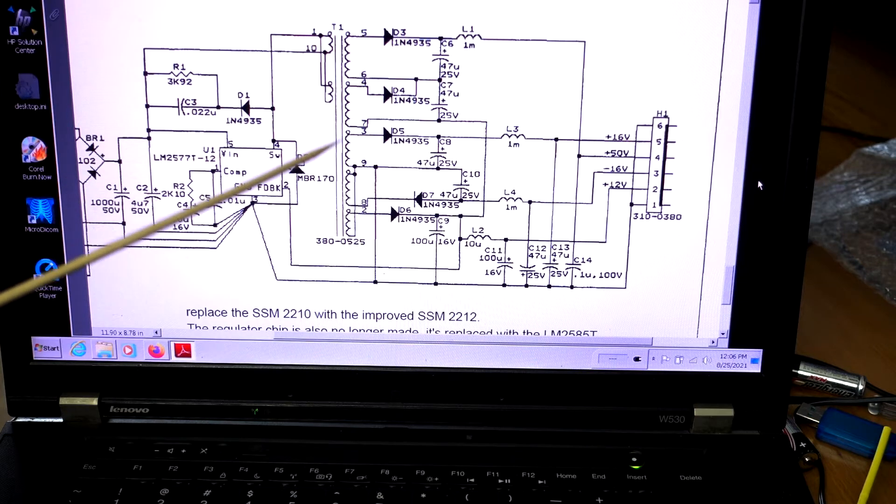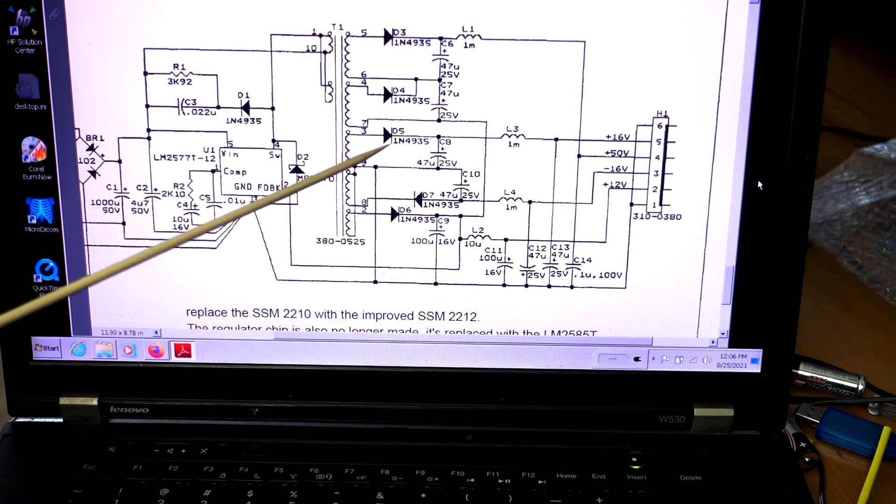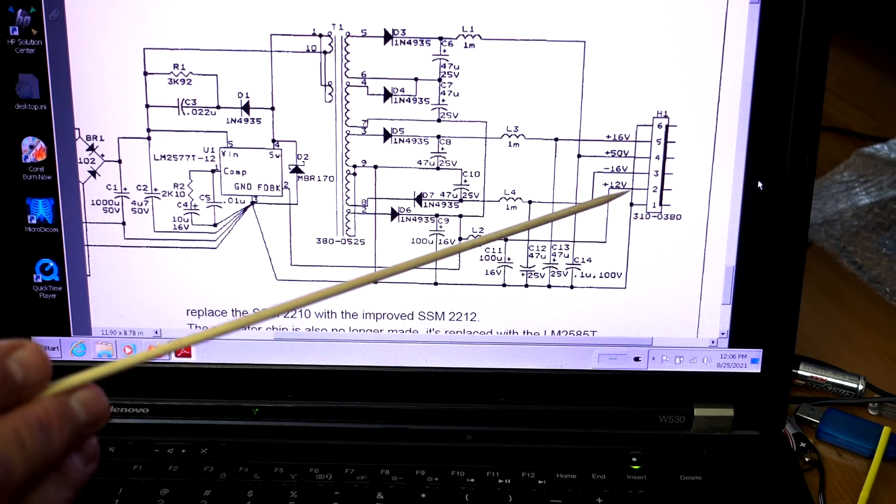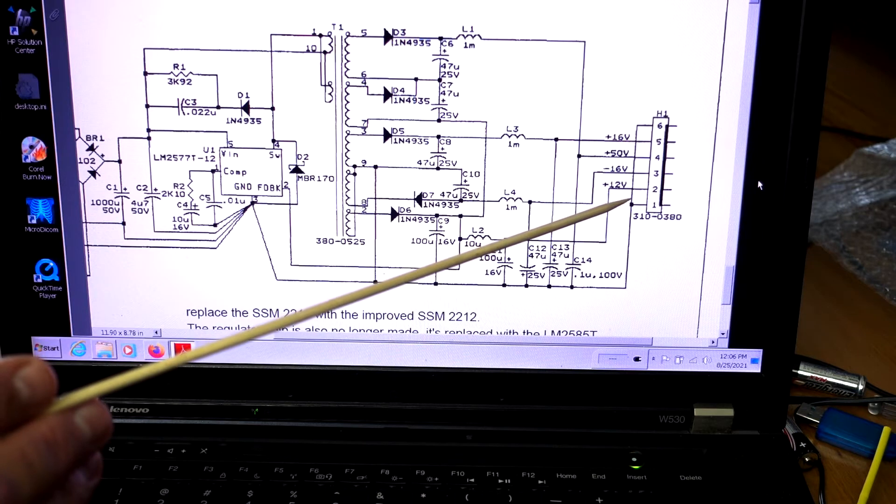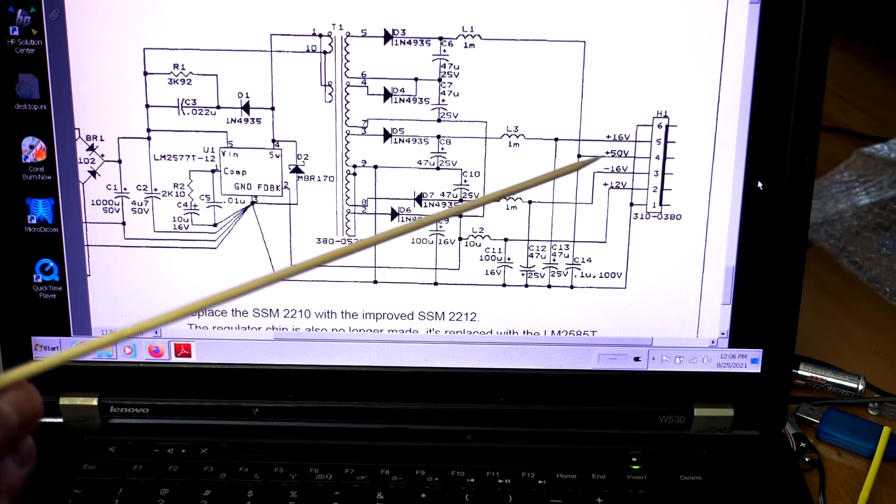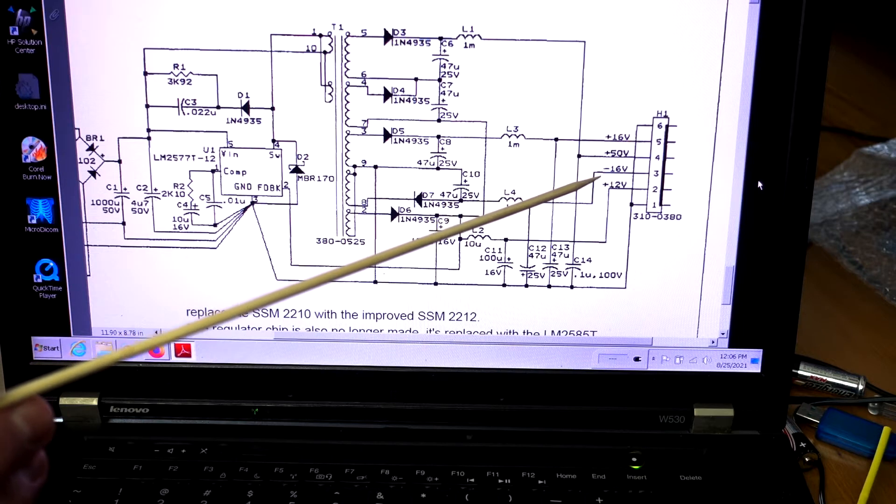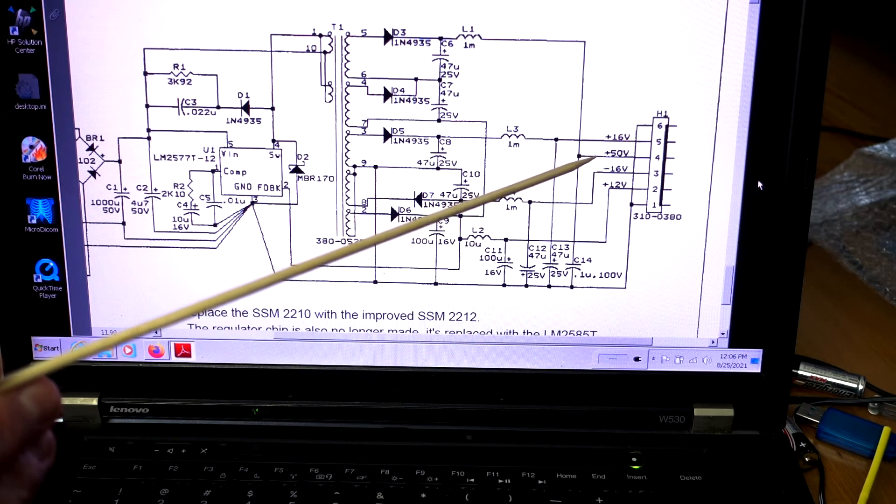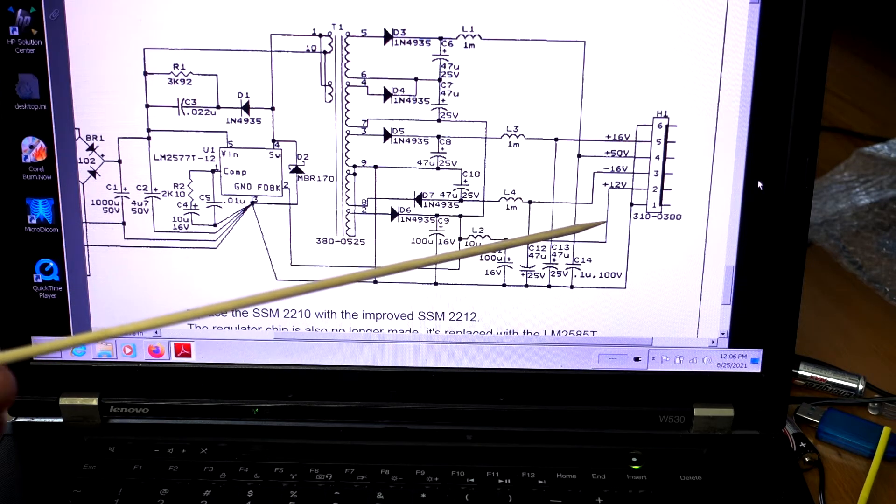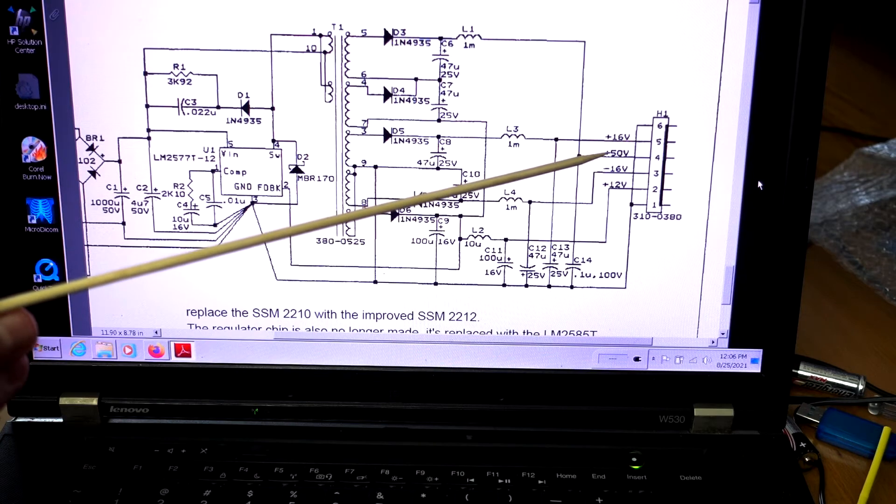And this is the flyback transformer and gives different voltages for the purpose of powering this preamp which are 12 volts for powering tube filaments and all relays which are rated at 12 volts DC. Then we have a regular minus 16 plus 16 volts for the op amp rails. And plus 50 volts that's for the tube plates, so-called starving tube plates voltage. And also fits the output stage of the preamplifier. So we need 12 volts, plus minus 16, and 50 volts.